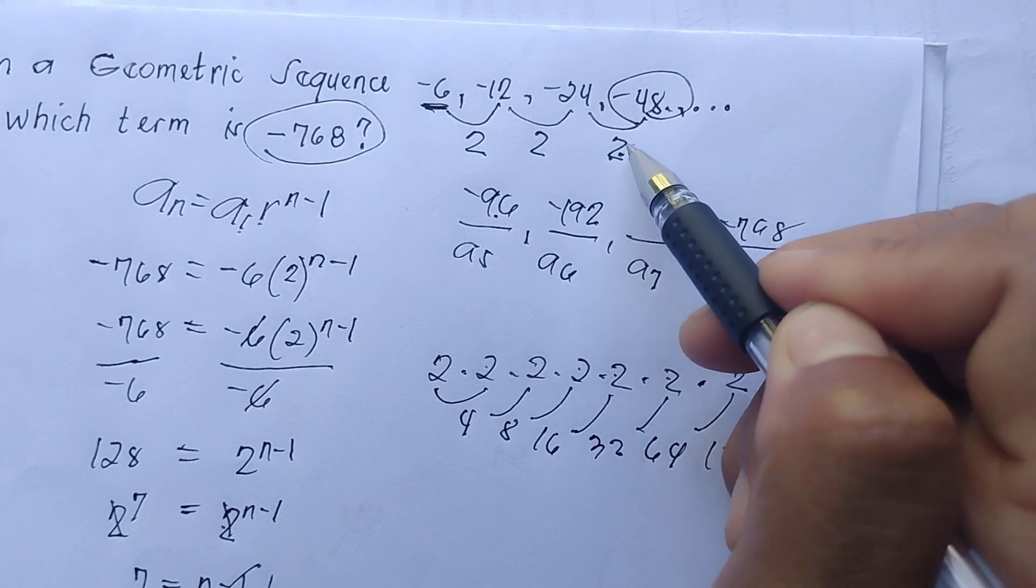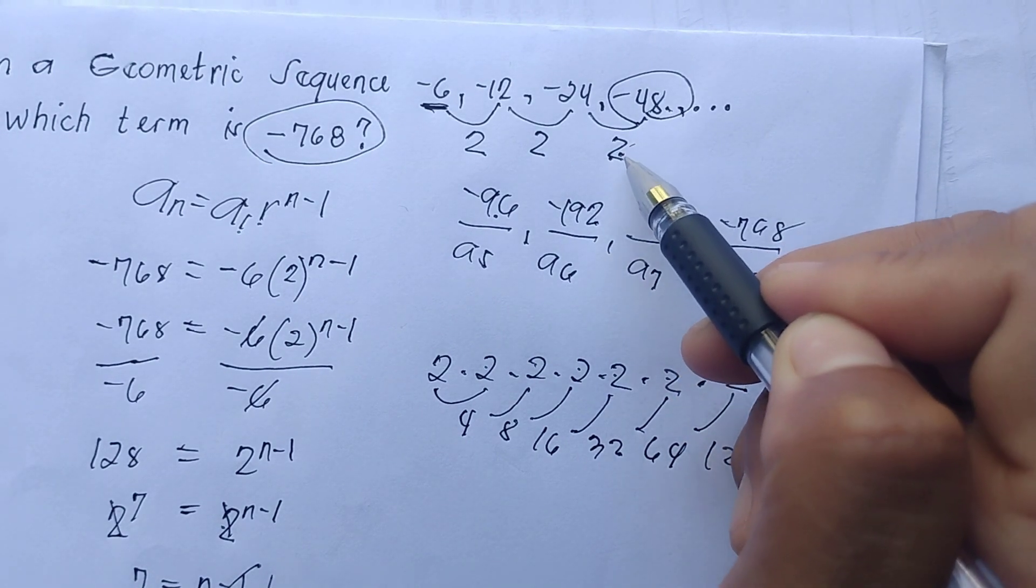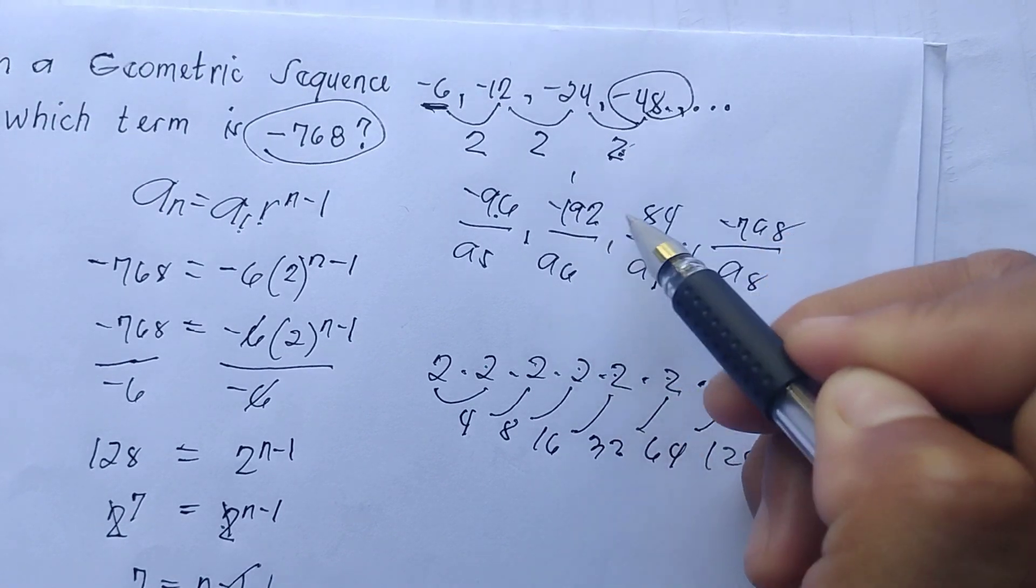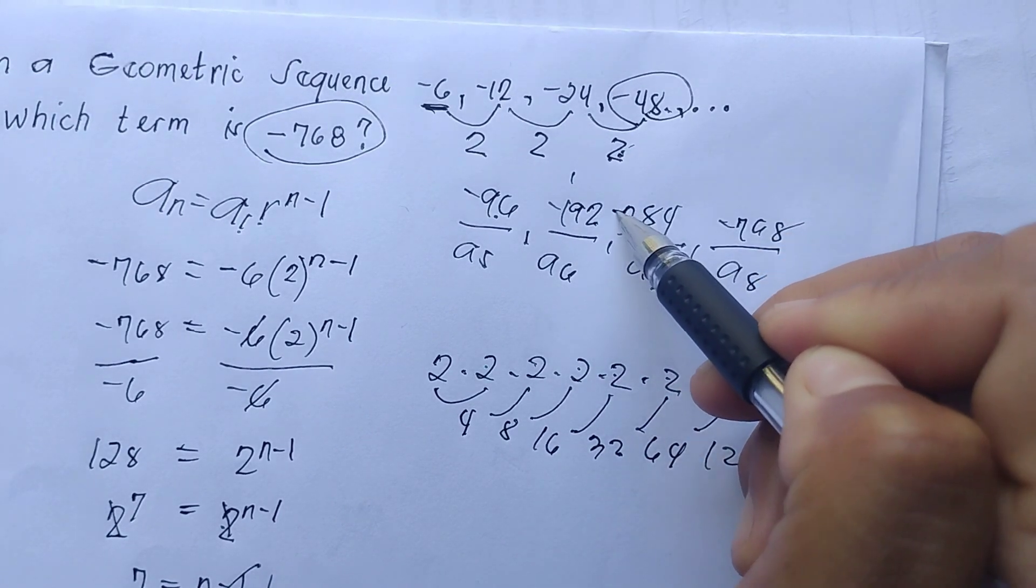Times 2 the common ratio: 2 times 2 we get 4, 2 times 9 we got 18, carry 1, so -384.